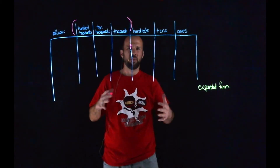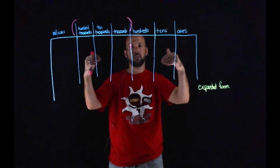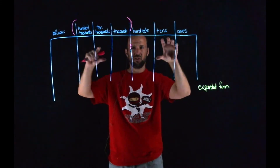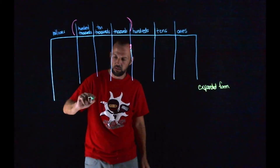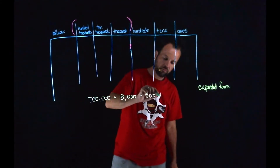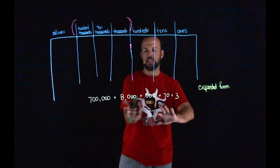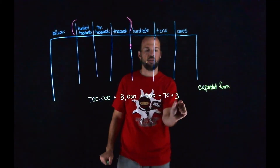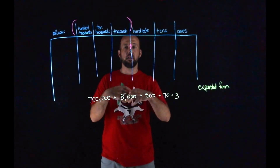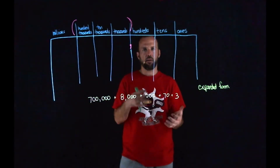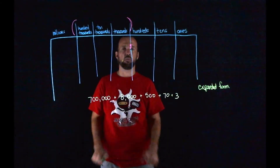We're going to do one more example together, but this time we're going to work backwards. I'm going to give you the expanded form to start, and I want you to figure out what that number would be in standard form, written in your place value chart, and in word form — so you'll have to read it out loud. Here's our number in expanded form: 700,000 plus 8,000 plus 500 plus 70 plus 3. Take a second, try that out on your own in your place value chart.